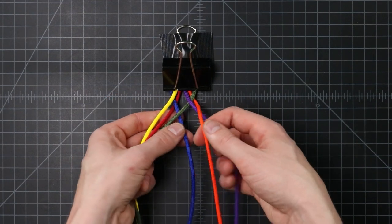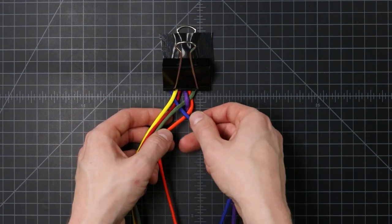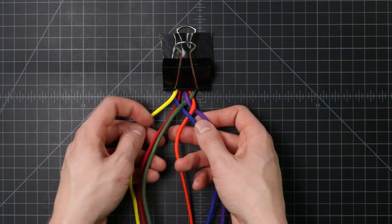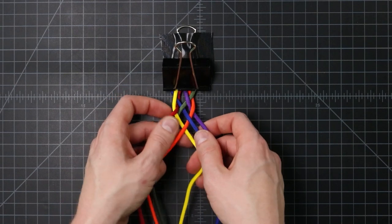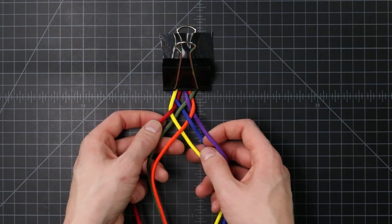So on our right side, we're always going to start with going over, and then under. And on our left side, we're always going to start with an under, over, under. Let's keep going.